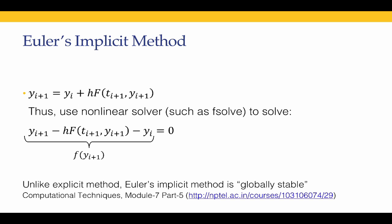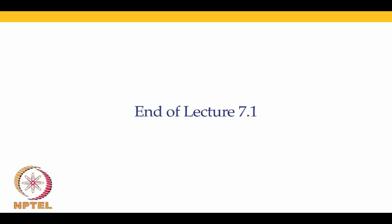That brings us to the end of lecture 7.1. What we covered was an introduction to ODE initial value problems, taking up one example and solving it using Euler's method — the simplest method available. We compared Euler's implicit and Euler's explicit methods. In the rest of this module we will work with more accurate explicit methods known as the Runge-Kutta family. In the next lecture, I will introduce the second-order Runge-Kutta method. See you then — thank you.